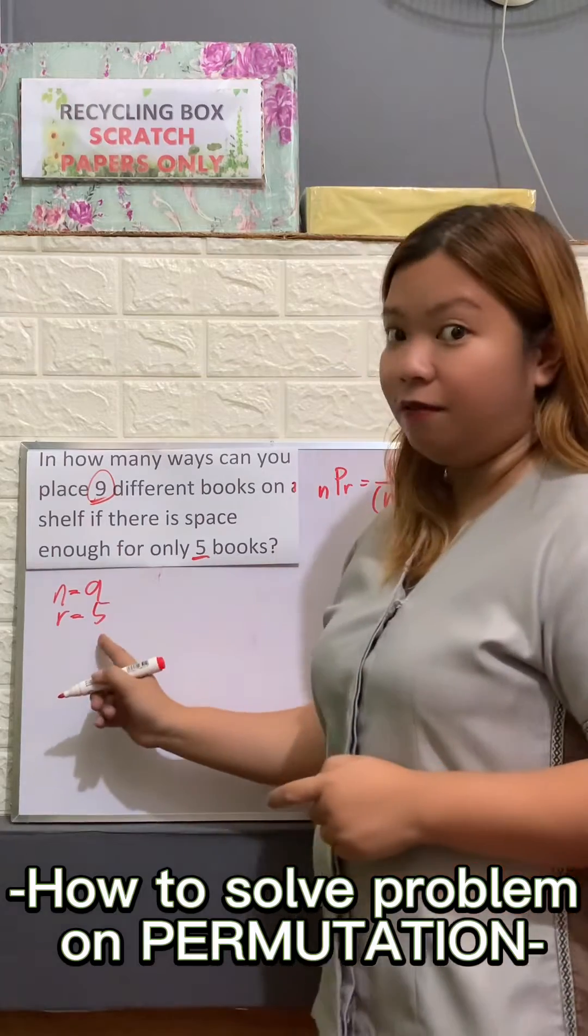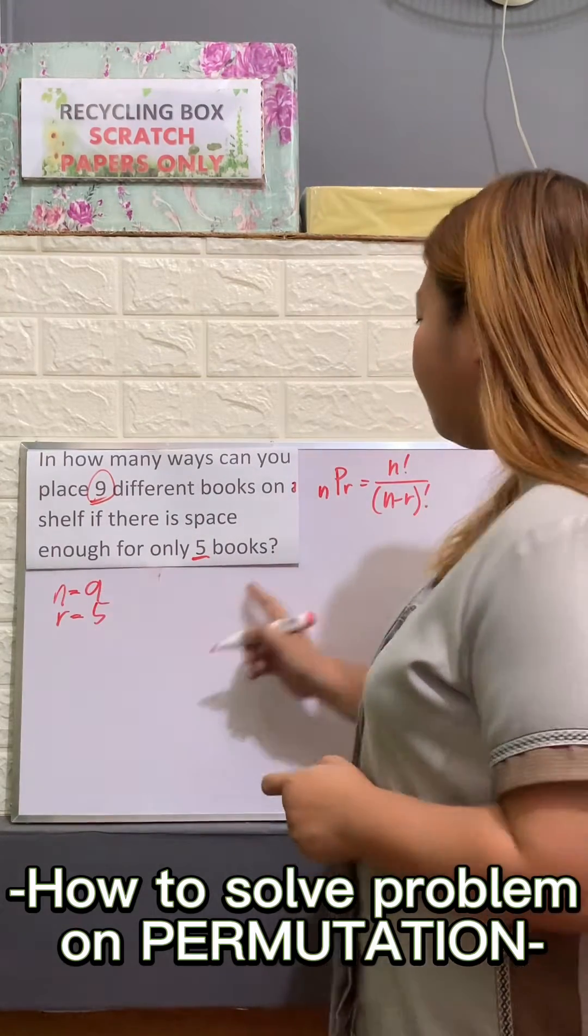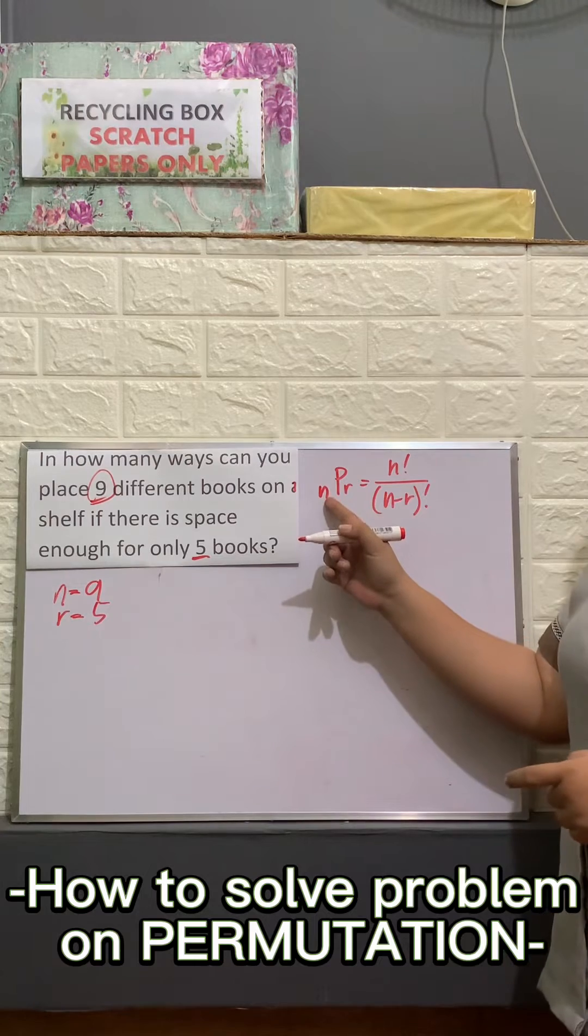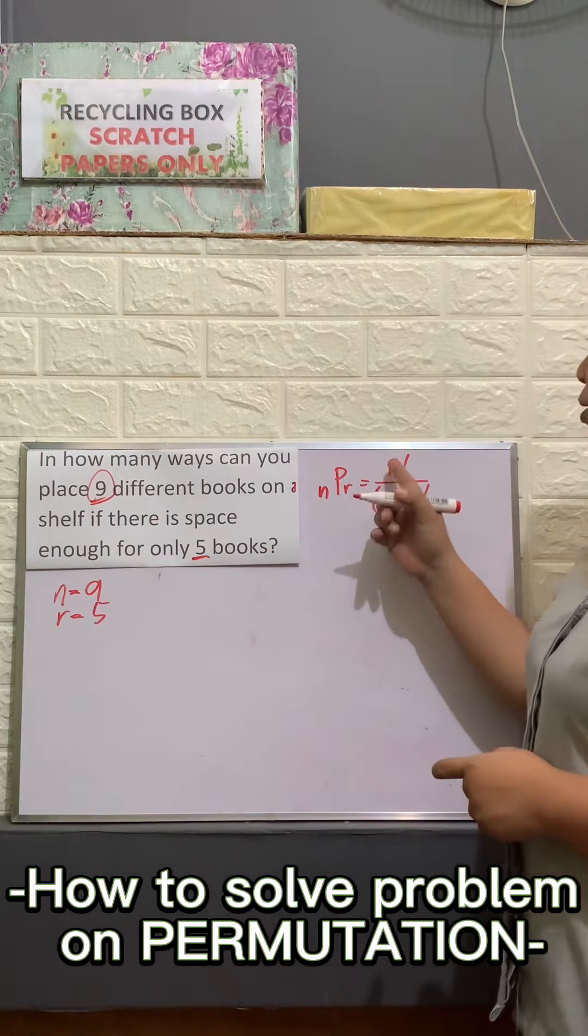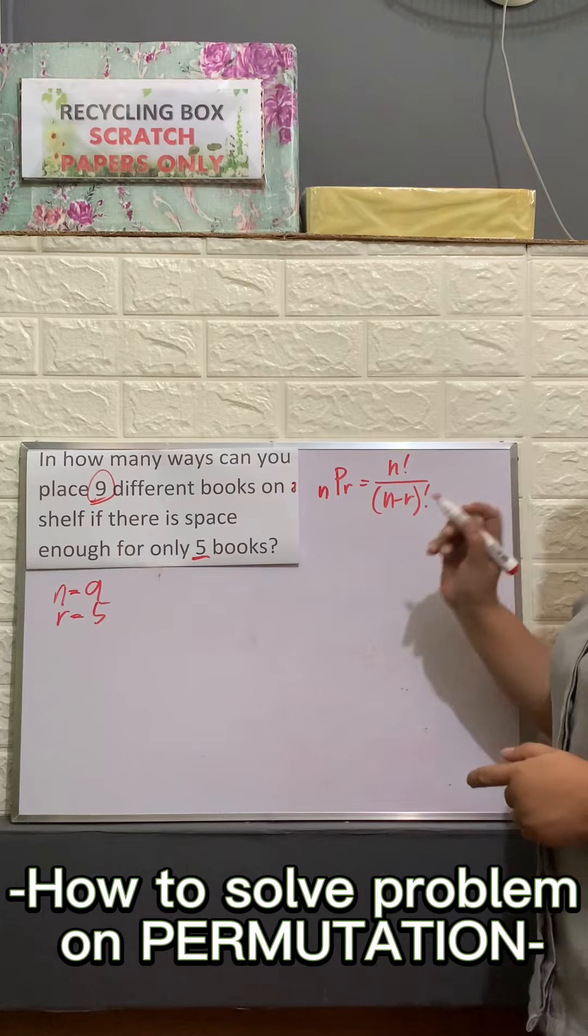Taken 5. Now, we substitute this one to our formula: permutation of N taken R at a time equals to N factorial over the quantity of N minus R factorial.